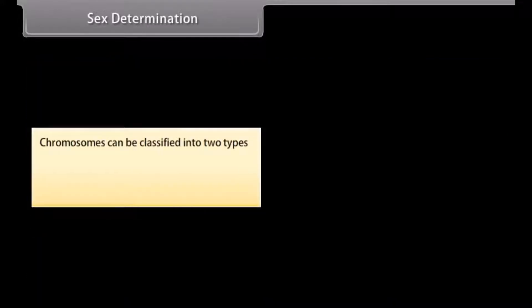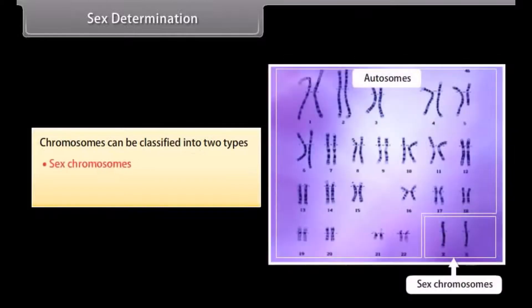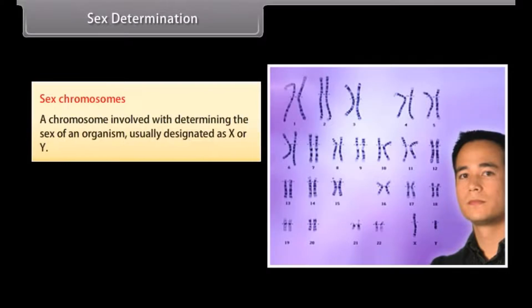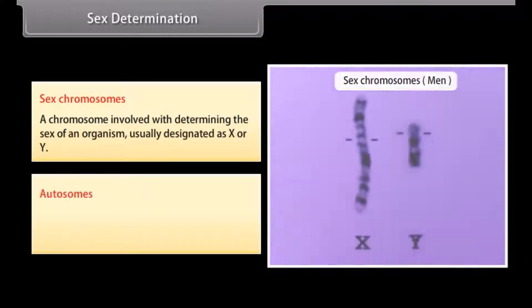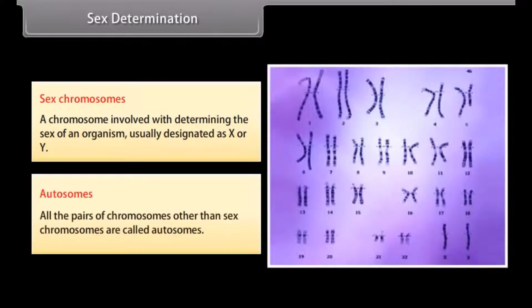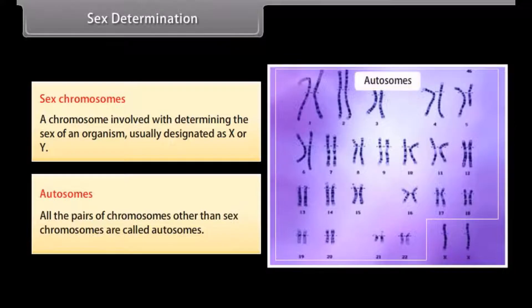Sex Determination. Chromosomes can be classified into two types: sex chromosomes and autosomes. Sex chromosomes are chromosomes involved in determining the sex of an organism, usually designated as X or Y. Autosomes are all the pairs of chromosomes other than the sex chromosomes.